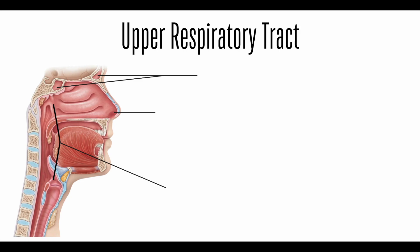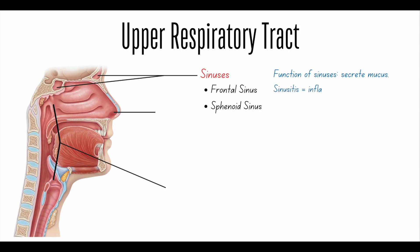In the upper respiratory tract, we have sinuses. In this image we see the frontal sinus as well as the sphenoid sinus, and their main function is to secrete mucus in order to protect us against infection. Many of you have heard about sinusitis. Sinusitis is the inflammation of the sinuses, which can occur due to viral or bacterial infection. That's why we feel stuffy when we have inflammation there.